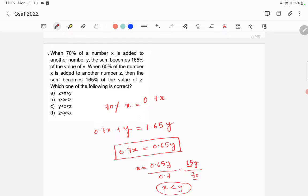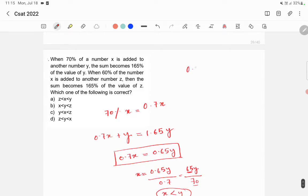We have the second condition. In the second condition, 60% of number x, that means 0.6x is added to z. Then it becomes 1.65z. Similarly, if I rearrange, I will get 0.6x is equal to 0.65z.